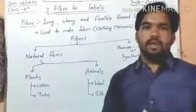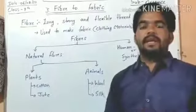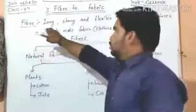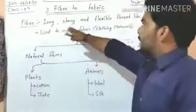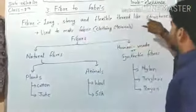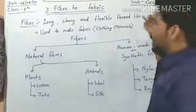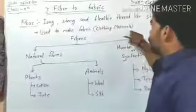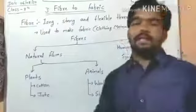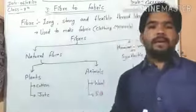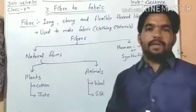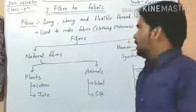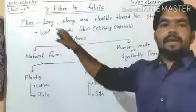Fiber means 'reshe' — fibers are long, strong, and flexible thread-like structures. They are used to make fabrics like clothing materials. These fibers are obtained from different sources and different types of clothes are made from them.